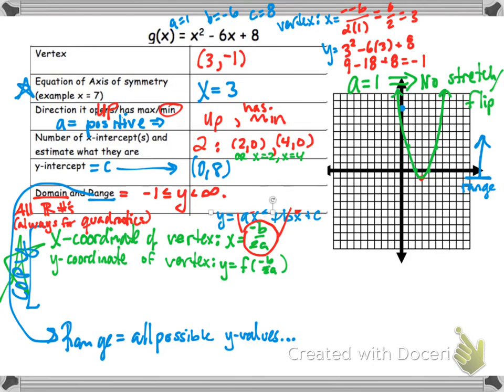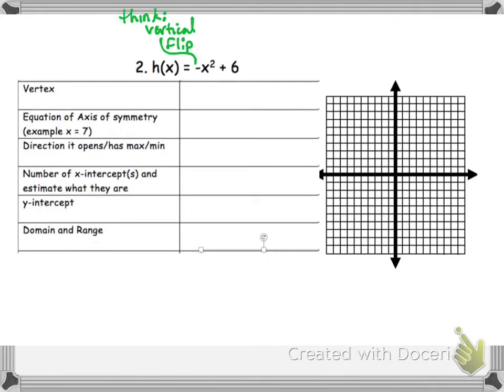All right, let's do one more easier one. So just think about this one. We don't even need to use our new rule. We know that there's a vertical reflection, and there's a vertical shift up 6.